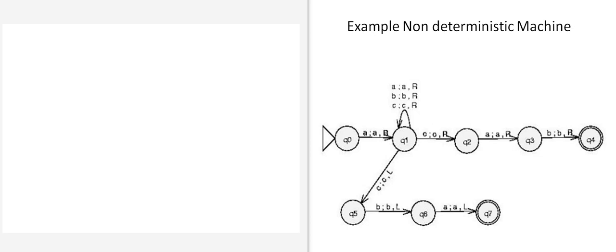In this video, I'll show you how to trace an input in a non-deterministic Turing machine. Let's say we have the input A, C, A, B. The tracing is going to be a tree. We start with the start configuration, which is the start state, and we have the input string immediately after it, meaning the pointer of the Turing machine is now on A.